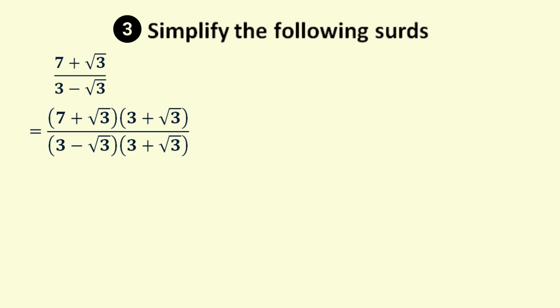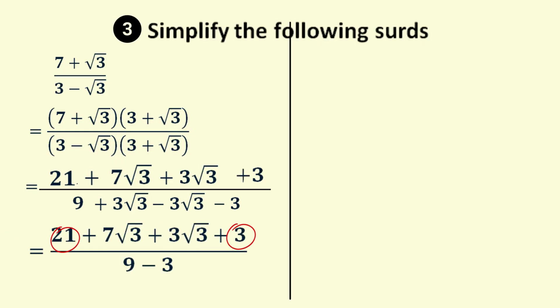Now let's expand the brackets in the numerator. 7 times 3 is 21. 7 times the square root of 3 is 7 root 3. Root 3 times 3 is 3 root 3. And the final term is root 3 times root 3, which is 3. We can expand the denominator in the same way to get 9 minus 3, which is 6. Group 21 and 3 in the numerator to get 24, while 7 root 3 and 3 root 3 is 10 root 3.